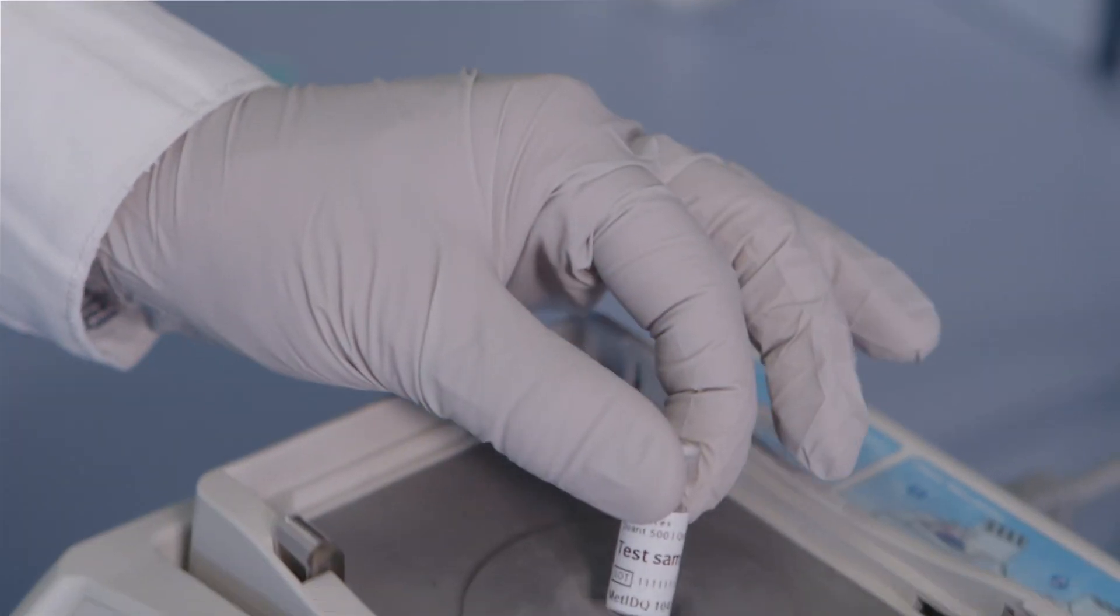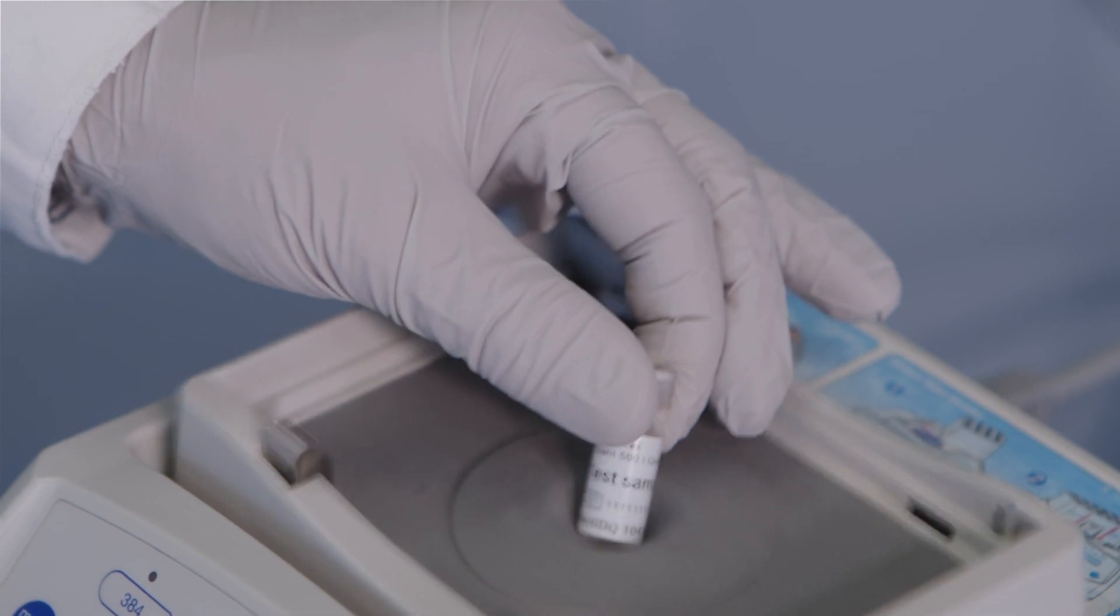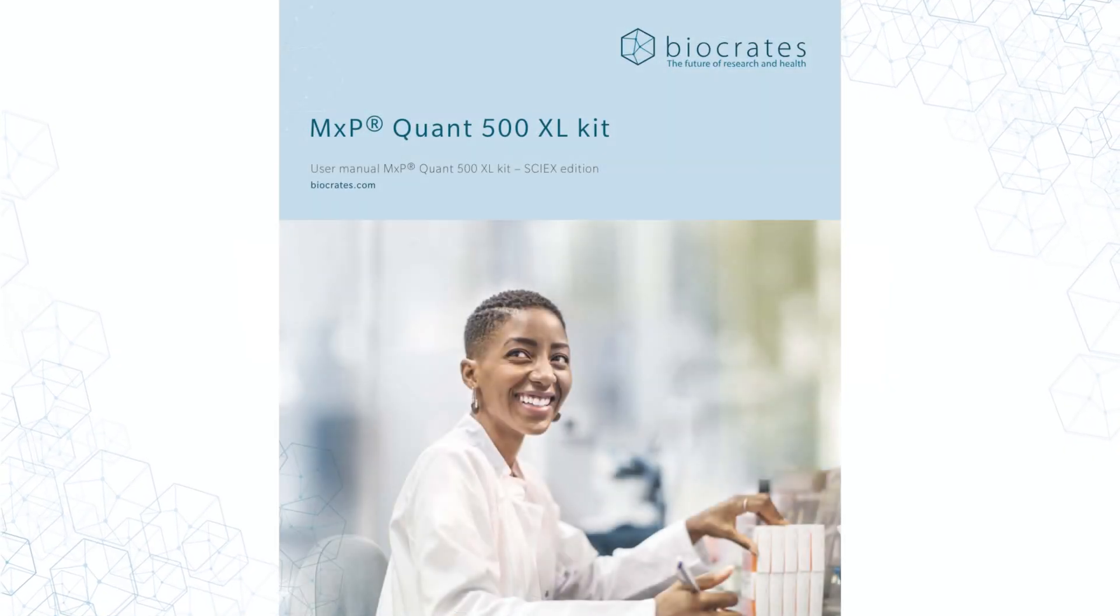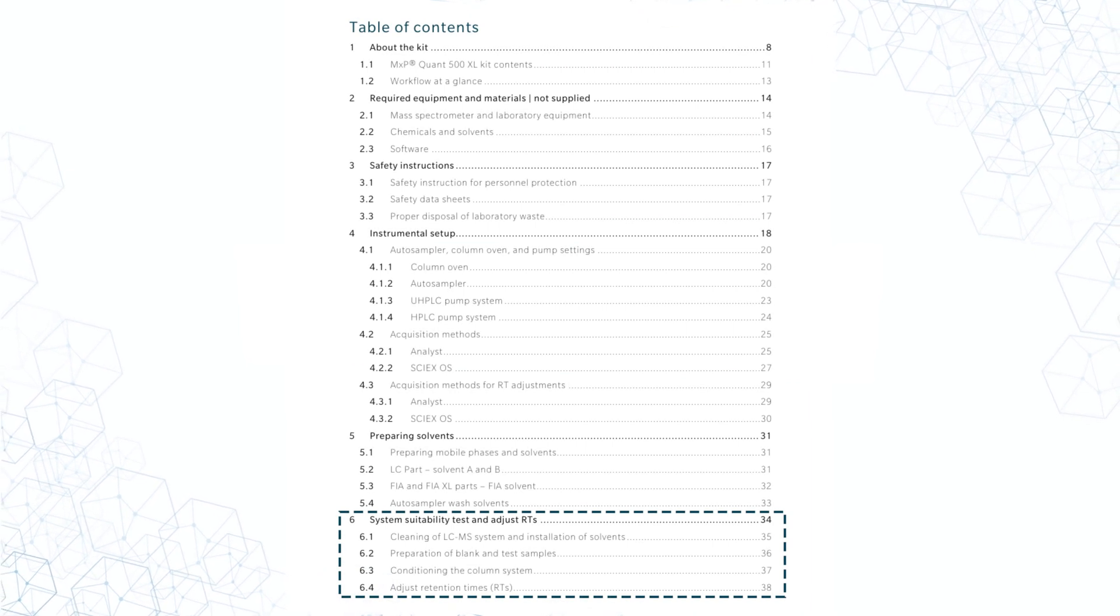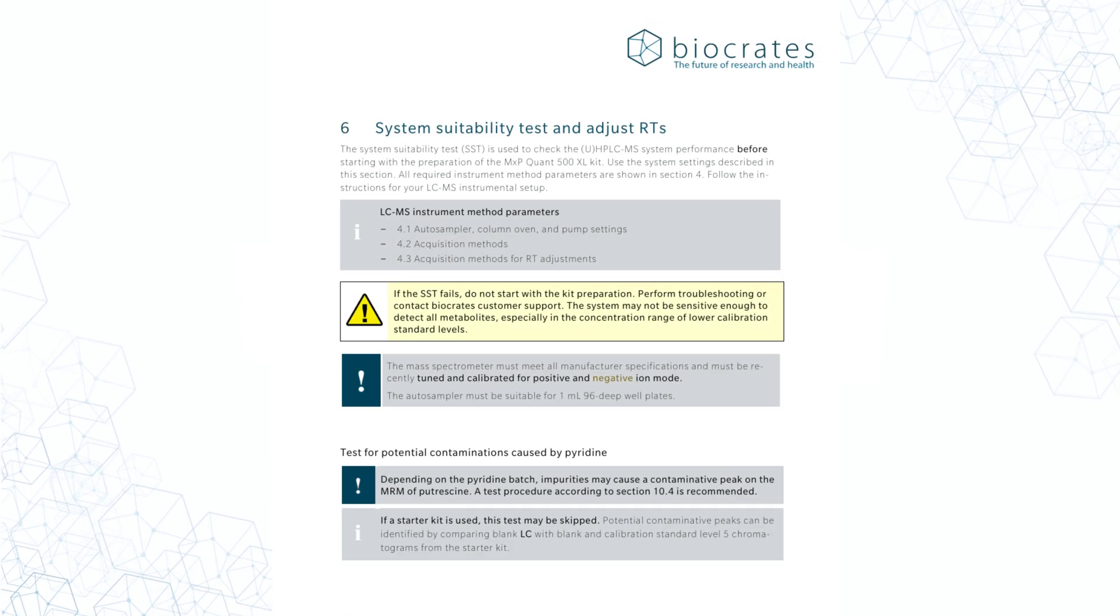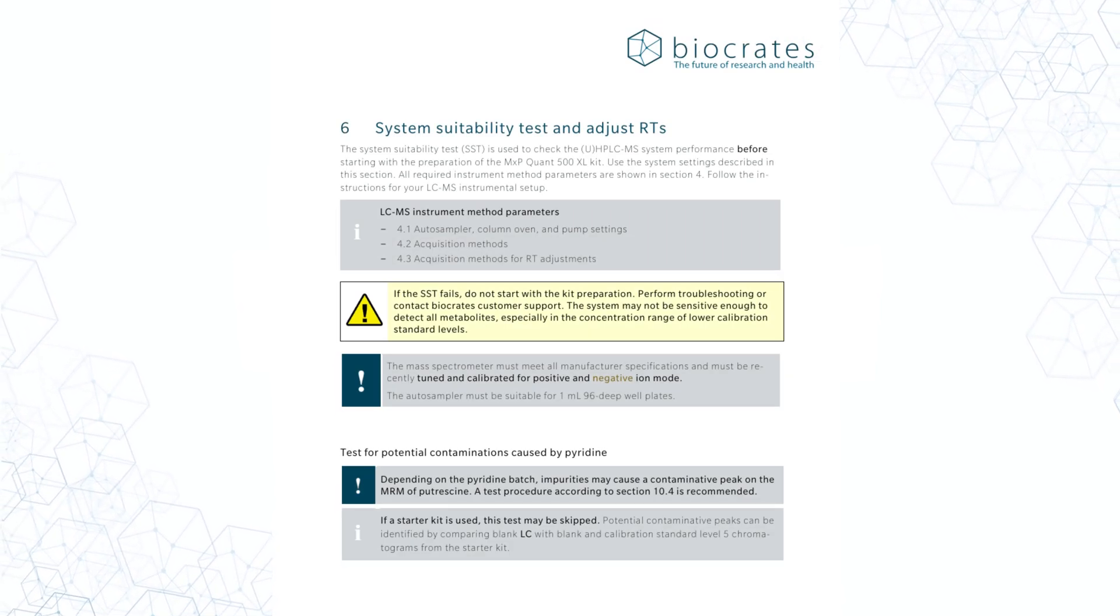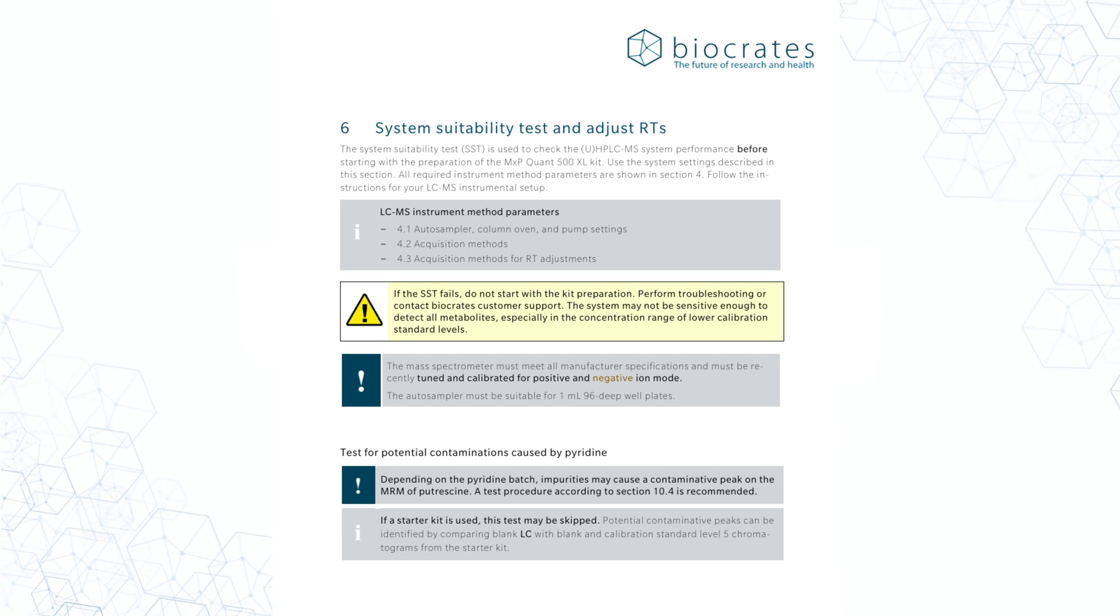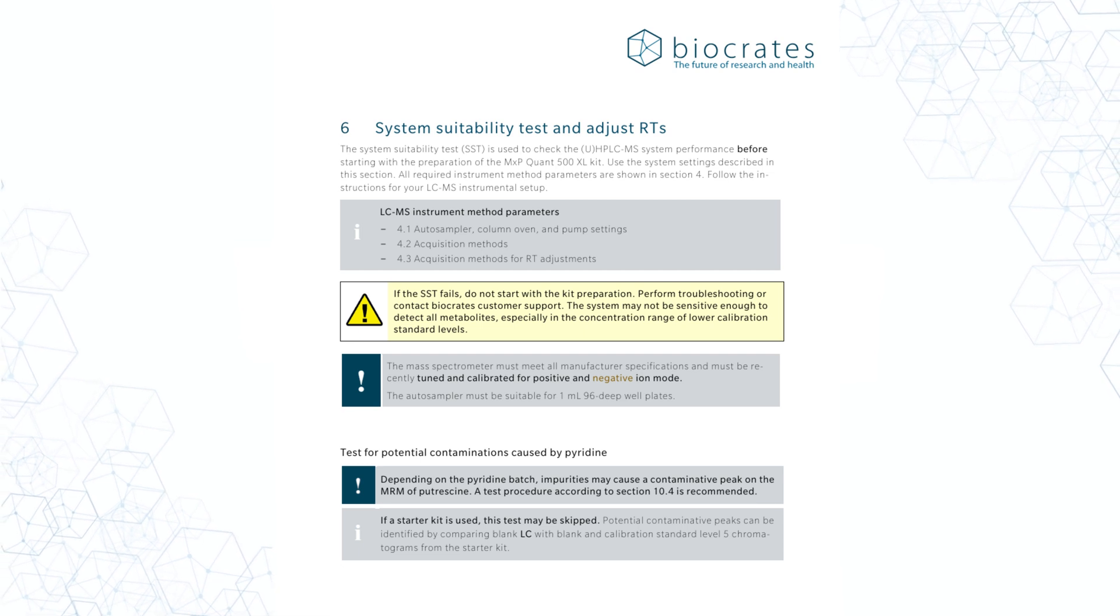To check the LC-MS system performance, prepare and run the system suitability tests which are provided with each kit. The SST criteria is well explained in the Quant500 XL user manual. We recommend to perform first the FIA and FIA-XL system suitability test, followed by the LC system suitability test. If the system suitability test fails, do not start with the kit preparation. Please contact Biocrates' support team at support@biocrates.com.